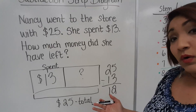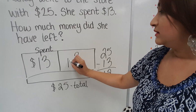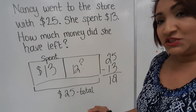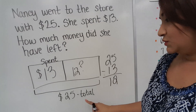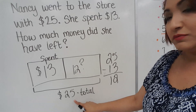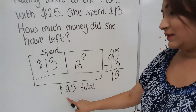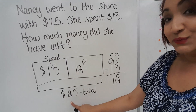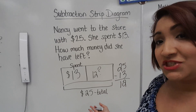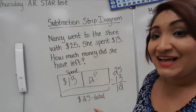I've told them if you want to, you can check your work. So let's see if 13 plus 12 equals 25. 3 plus 2 equals 5, and 1 plus 1 equals 2. So they know that they have done their subtraction strip diagram correctly.